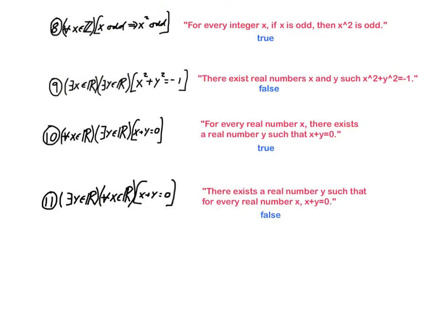For number ten, now we've got two quantifiers, but this time they're different. And so make sure you read it from left to right. For every real number x, there exists a real number y such that x plus y is equal to zero. So what they're saying is if you give yourself an arbitrary or a generic real number x, then you can find another real number y such that they add up to zero. Well, that's true because the y that would work here would be negative x. And negative x is a real number if x is a real number.